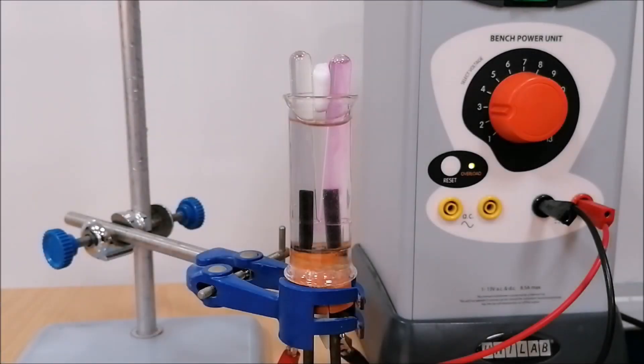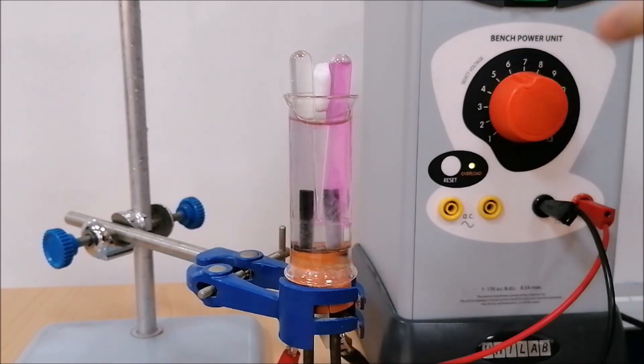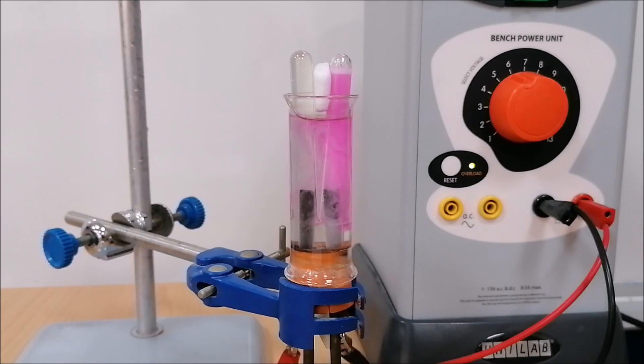I repeated the experiment, and this time I added some phenolphthalein to the solution to confirm which electrode is which. It might seem a bit counterintuitive that the side where the hydrogen is being produced is turning pink, as the hydrogen ions migrate in this direction. However, this is where hydrogen ions are being removed from the solution, leaving behind hydroxide ions, which make the solution here alkali.